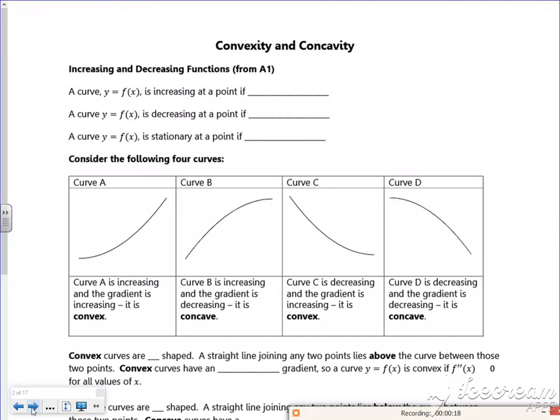Right, so it talks about first of all increasing and decreasing functions, but we're aiming towards something called convex and concave. So we know if something's increasing, the gradient is greater than zero, and if it's decreasing we know it's less than zero, and we know it's stationary when it is zero.